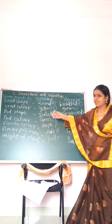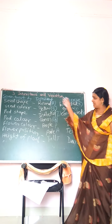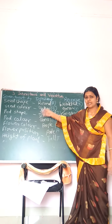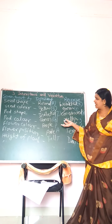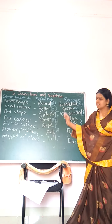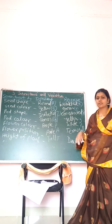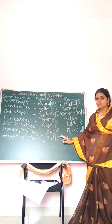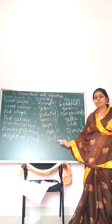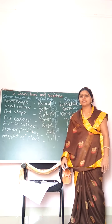Today we saw what is inheritance in the third chapter, including who Gregor Mendel was, the seven traits of garden pea, and why his work was not recognized. I hope you all understand. Thank you.